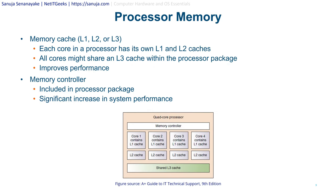Memory cache in processors is typically referred to as L1, L2, or L3 cache. Each core in a processor has its own L1 and L2 caches, while all cores share the L3 cache within the processor package. Engineers found that dividing the cache this way improves processor performance, rather than having a single cache module. A memory controller is also included in the processor package.